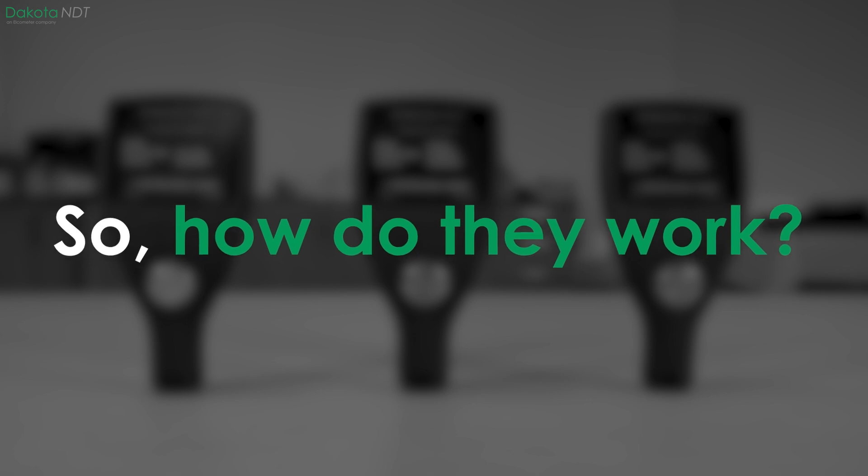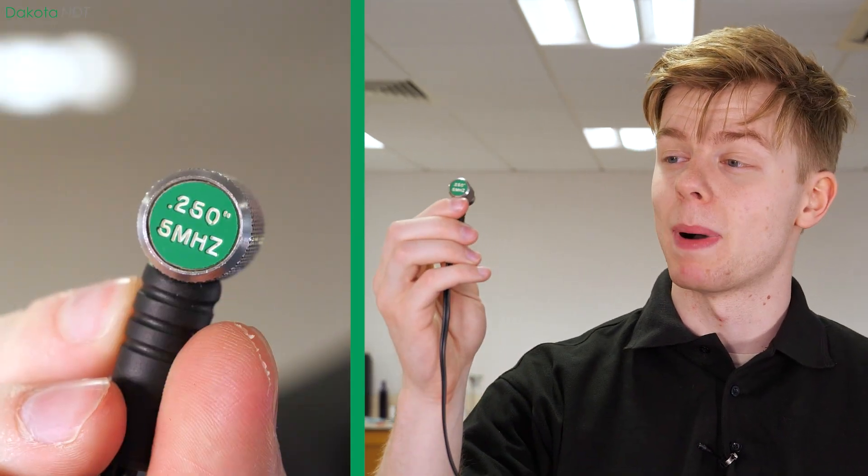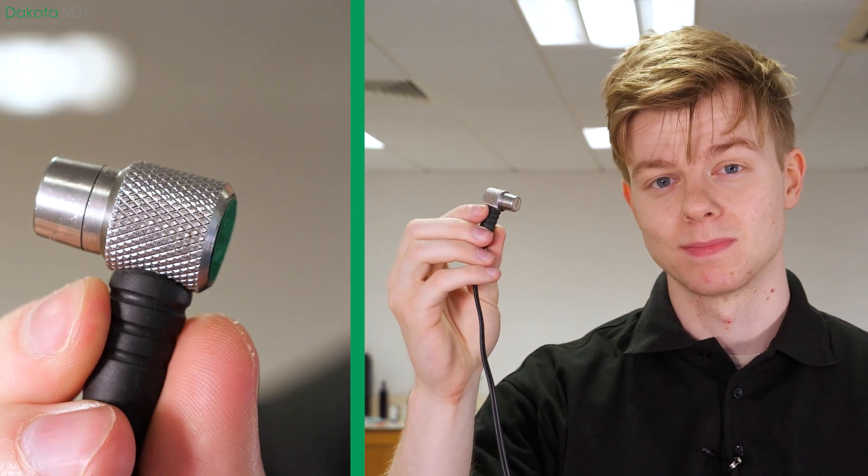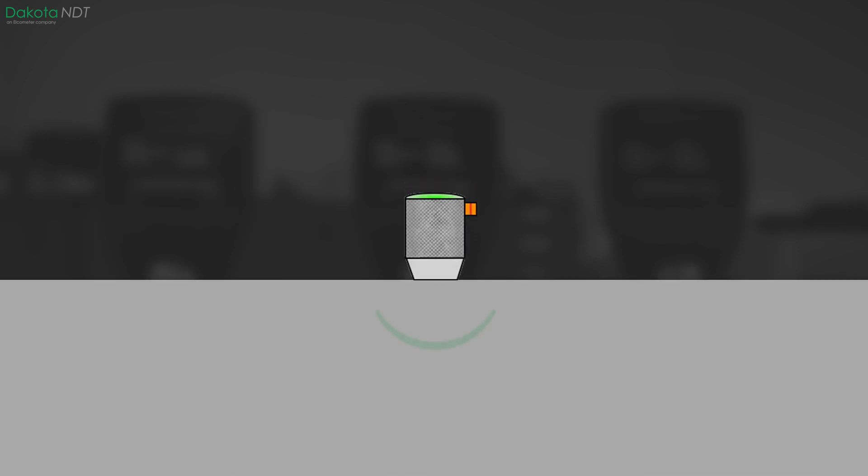So how do they work? Ultrasonic distance measurement uses high frequency sound pulses generated by a device called a piezoelectric transducer. These pulses travel through the material being tested and bounce back to the transducer.